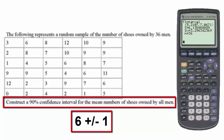That is, the 90% confidence interval for the average number of shoes owned by all men is 6 pairs of shoes, give or take one pair of shoes.